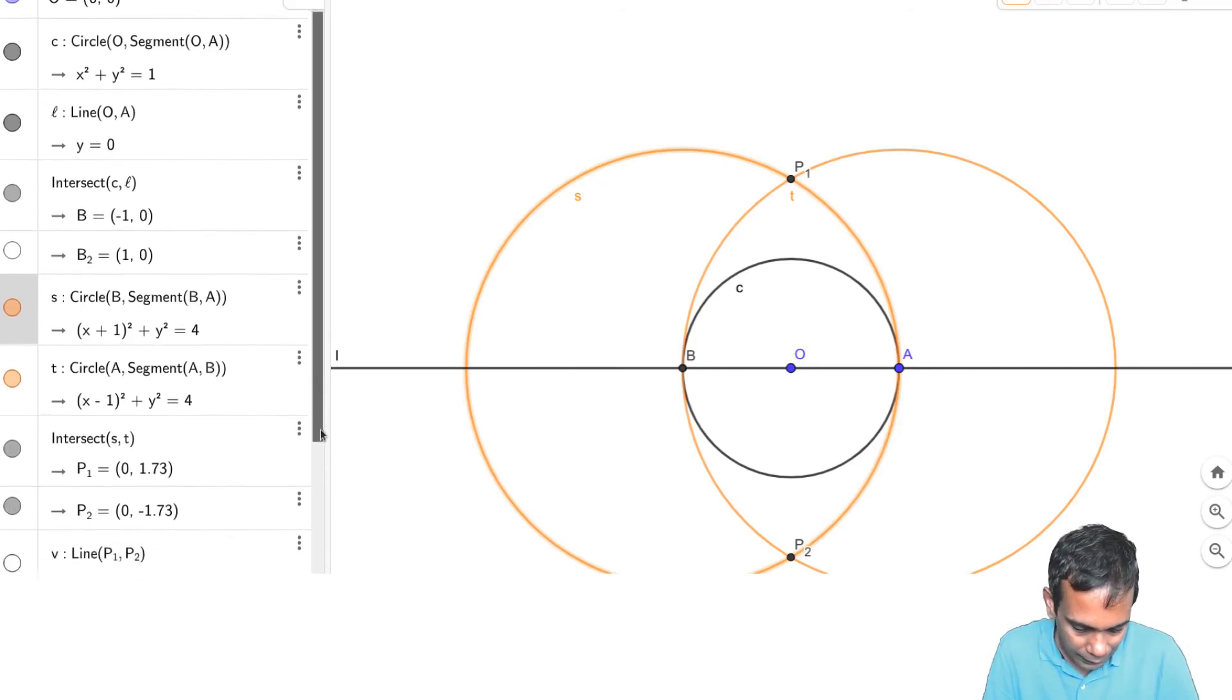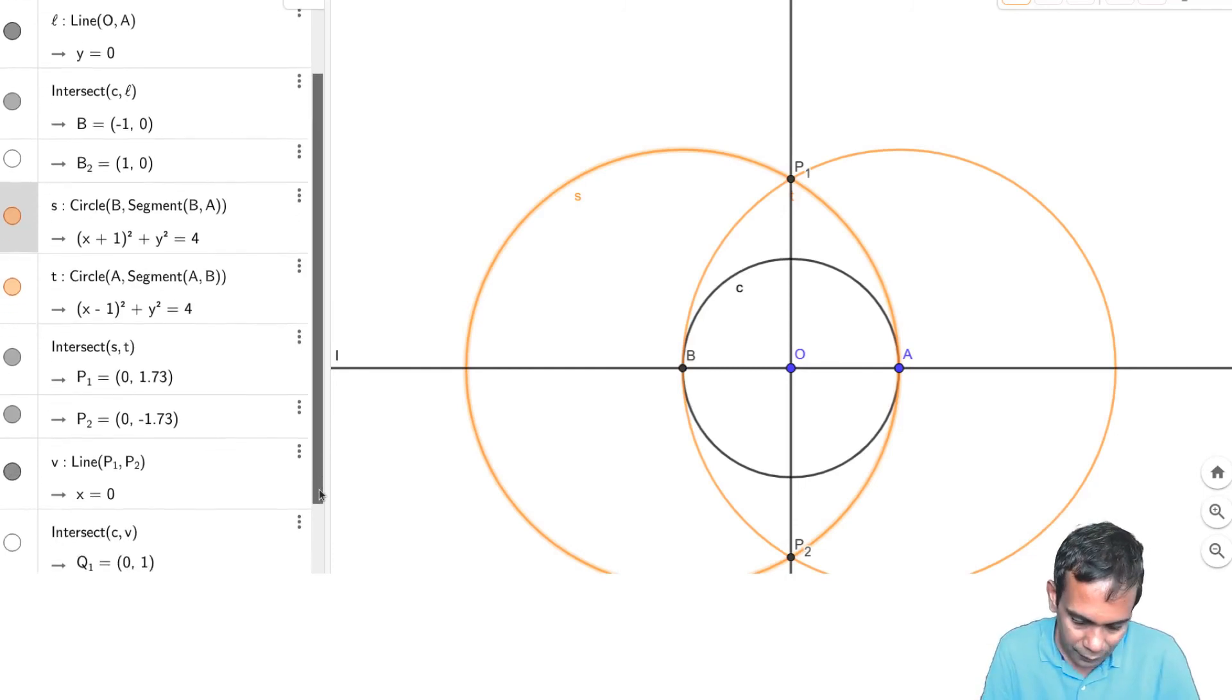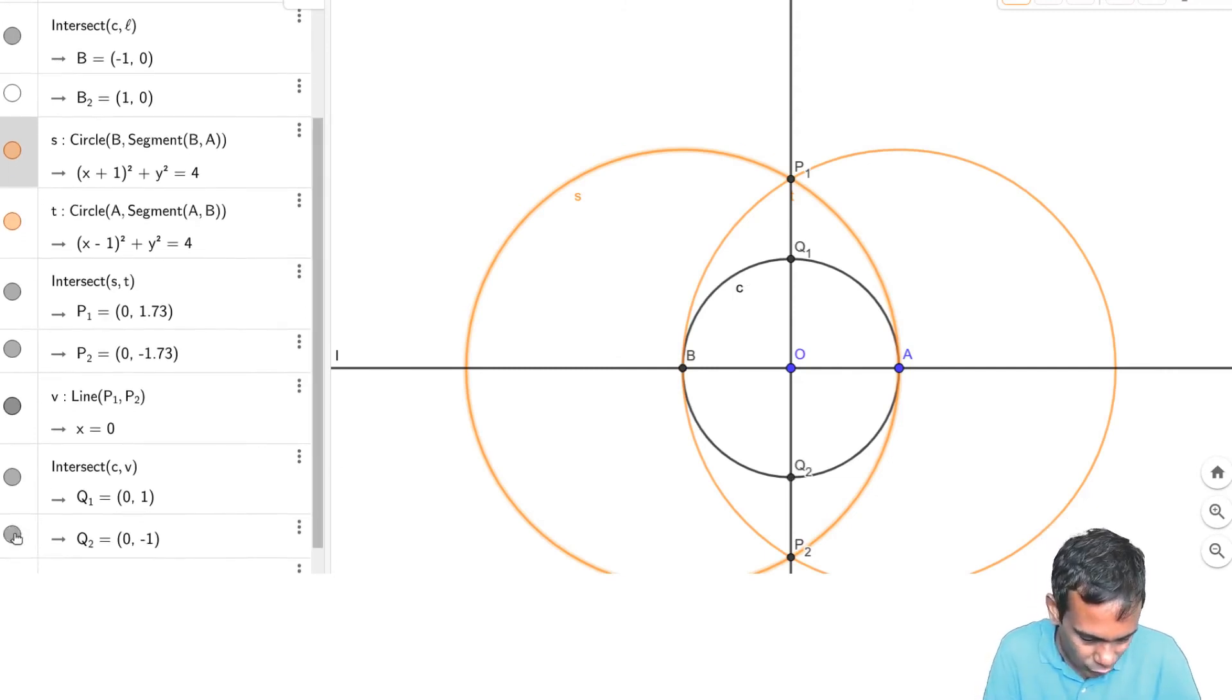And so I can now, these points have also been constructed. And now I construct the line V as the unique line that passes through P1 and P2. And now let's look at the intersection of V with the circle C which we had drawn earlier. And I am calling that point Q1. There is another point of intersection which is called Q2. Okay, but I won't really be needing that. And now I have this point Q1.